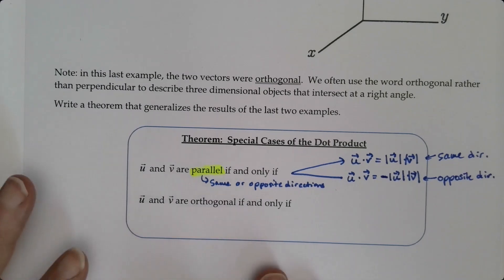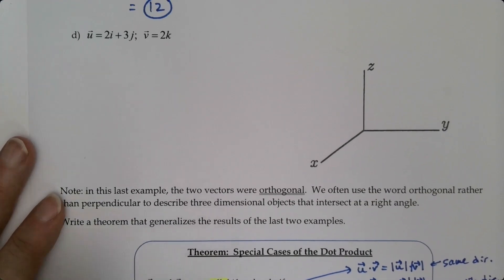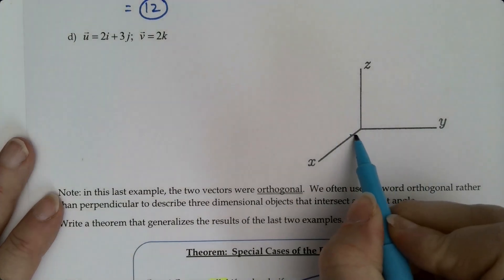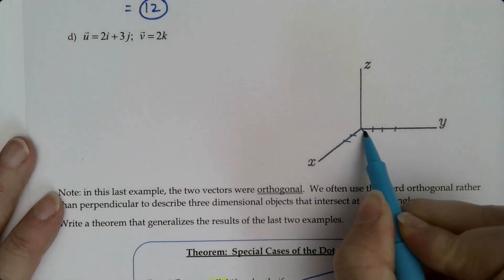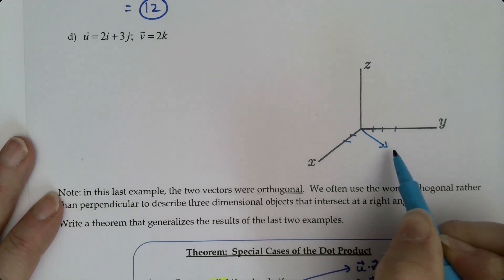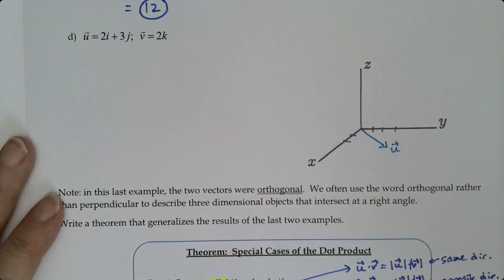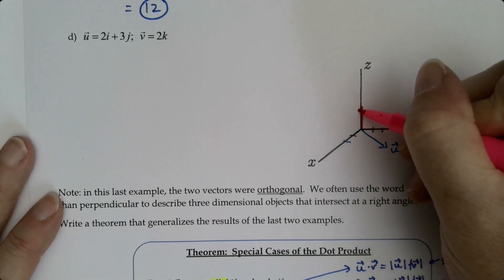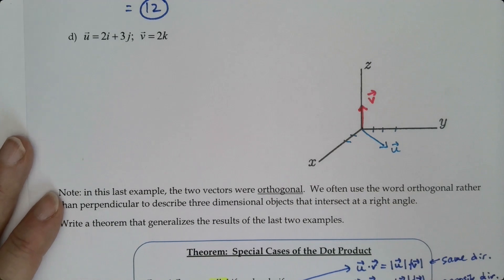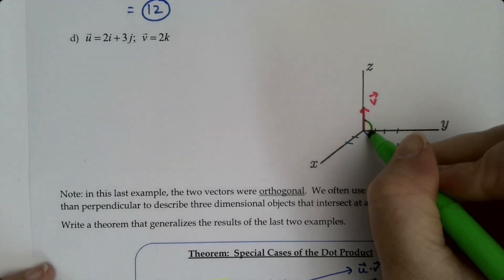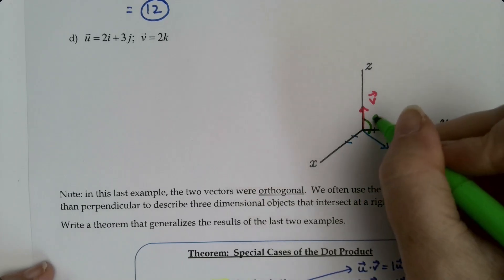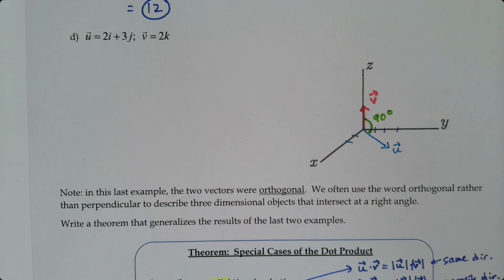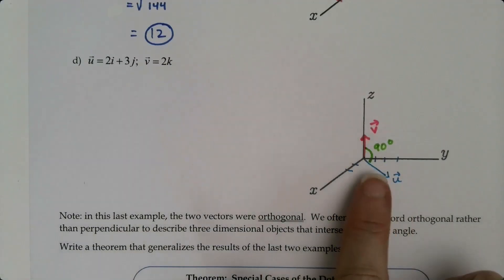Now let's look at another example. We have u = (2, 3, 0), which lies in the xy-plane, and v = 2k, which points straight up along the z-axis. The angle between them is from the xy-plane up to the z-axis, which is 90 degrees — the z-axis is orthogonal to the xy-plane. 'Orthogonal' is the three-dimensional word for perpendicular.